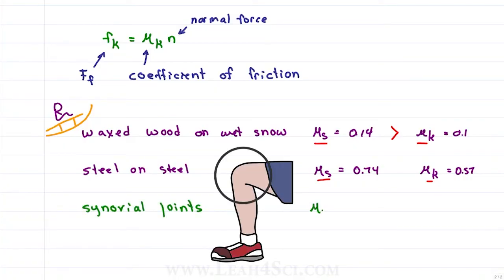Synovial joints have a mu sub s of 0.01 and a mu sub k of 0.003, because we need to be able to move.